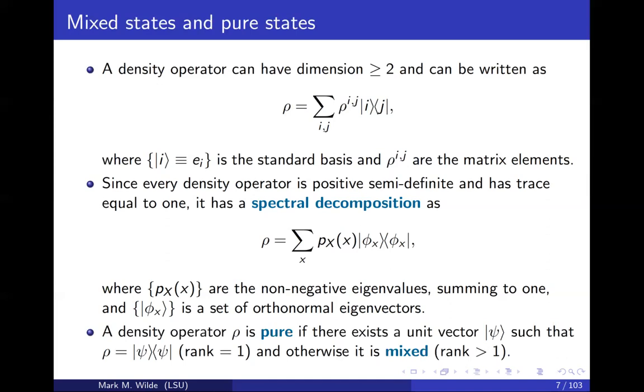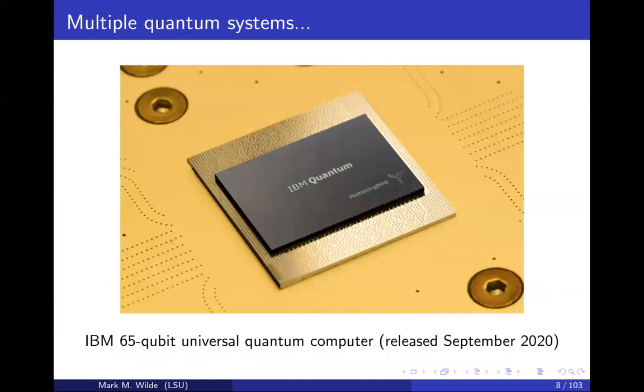And some terminology, we say that a density operator ρ is pure if there exists a unit vector such that you can write it as the outer product of that vector with its conjugate transpose. And so what does that mean? It's pure if the rank of the state of the matrix is one, and otherwise it's mixed. So if it's pure, the interpretation is that it's definitely in the state ψ. If it's mixed, you can think of it as like a probabilistic mixture of different states.